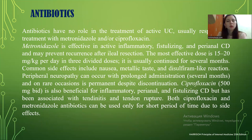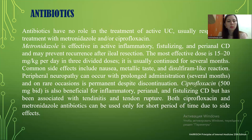Antibiotics. Antibiotics have no role in treatment of active ulcerative colitis, but Crohn's disease usually responds to treatment with metronidazole and ciprofloxacin. Metronidazole is effective in active inflammatory Crohn's disease, fistulizing and perianal Crohn's disease, and may prevent recurrence after ileal resection. The most effective dose is 15–20 mg per kg per day in three divided doses and is usually continued for several months. Ciprofloxacin is also beneficial for inflammatory, perianal, and fistulizing Crohn's disease, but has been associated with tendinitis and tendon disruption. Both antibiotics can be used only for short periods due to side effects.